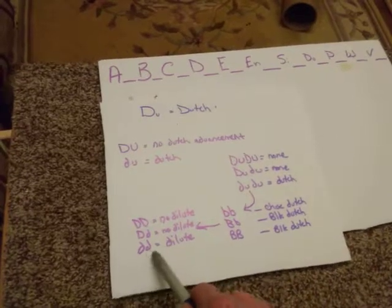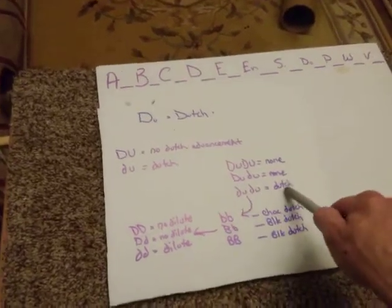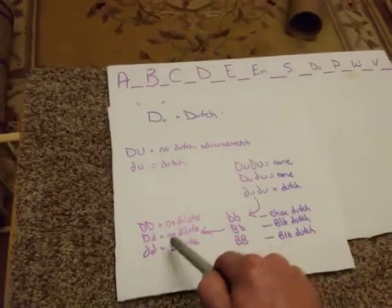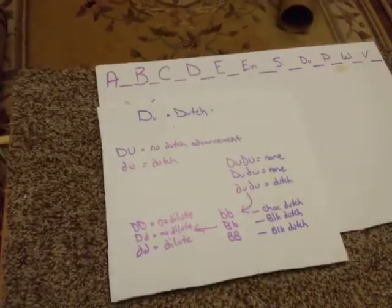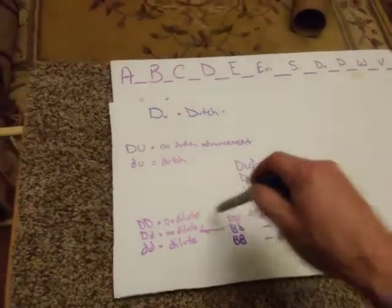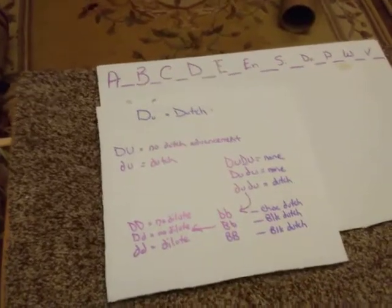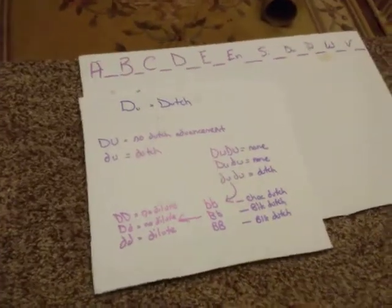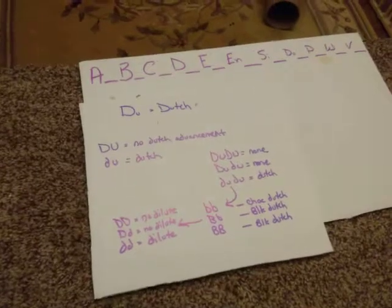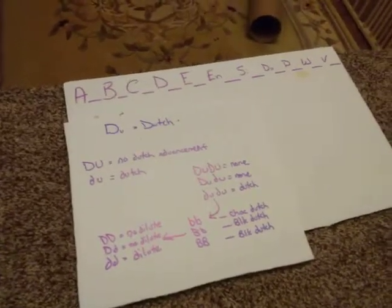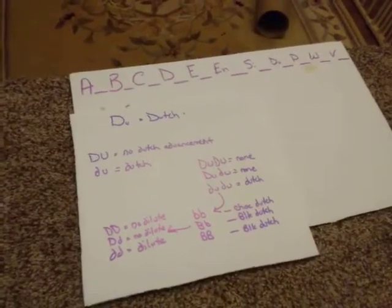But if we were to get Dutch plus the chocolate plus we get two copies of this recessive dilute, you're going to end up with a color called lilac Dutch, which lilac is the dilute color of chocolate.